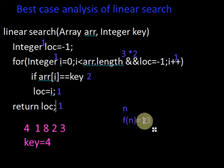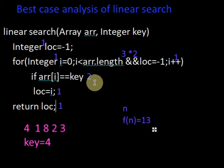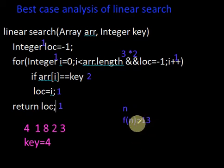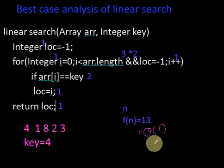Suppose each operation takes one millisecond to run, then as a whole this algorithm will require thirteen milliseconds to run, whatever the size of the array or whatever input is provided. In this best case, the time complexity or running time of the algorithm will always be a constant. If the running time is a constant, if f is a constant, then we can say that f is Θ(1). It means the time taken to run this algorithm is constant irrespective of the value of n.